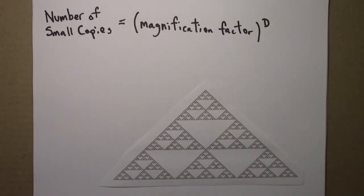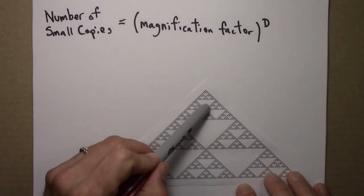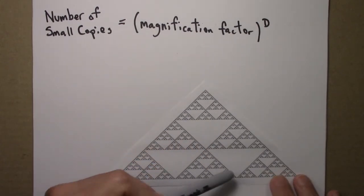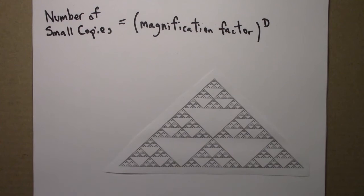So what's the number of small copies? Well, let's see. One, two, three, four, five, six. So I see six small copies in here.